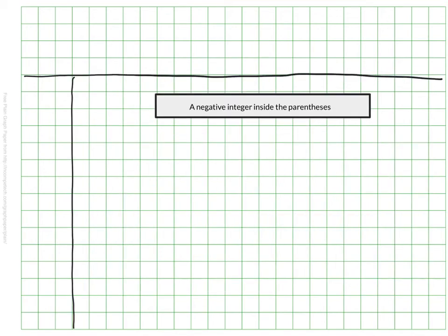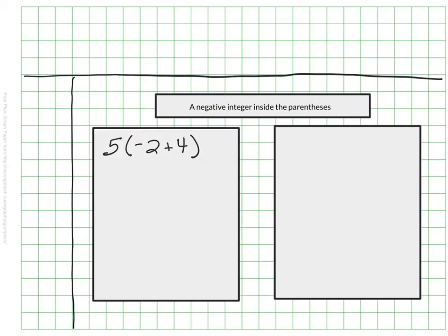For many students, that part is pretty friendly, but it gets tricky when the negative is found inside the parentheses during a distribution question. So that might look something like this, 5 times the value in parentheses of negative 2 plus 4. The good news is, the process is the same. We still need to make sure that we multiply our 5 times our negative 2, and then our 5 times our 4.